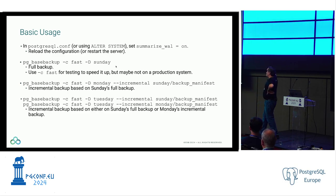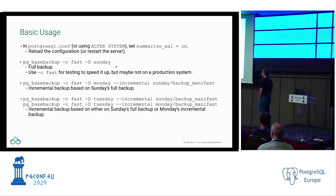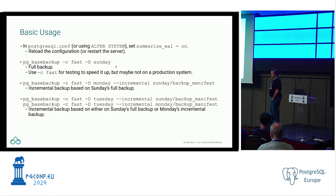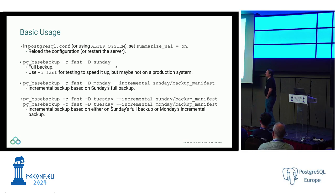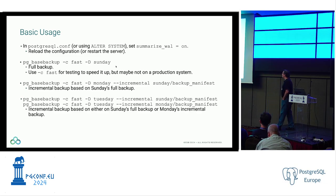On Tuesday, when we take our third backup, things get interesting because now we have meaningful choices. We might want to include everything that has changed since Sunday, or only include everything that has changed since Monday. If we include everything since Sunday, we'll only need the Sunday and Tuesday backups when we restore. If we include things changed since Monday, our backup will be smaller — presumably more changed between Sunday and Tuesday than between Monday and Tuesday — but the price is we'll need all three backups at restore time.